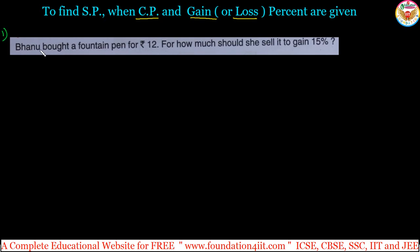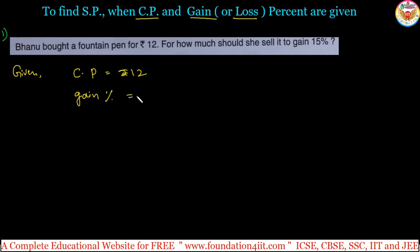Banu bought a fountain pen for rupees 12, so the cost price is given as rupees 12. For how much should she sell it to gain 15 percent? So the gain percentage is 15, and we are supposed to find out the selling price. I'll give two formulas here for when cost price and gain or loss percentage are given.